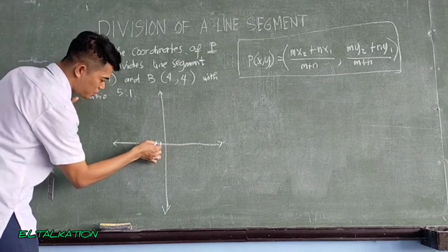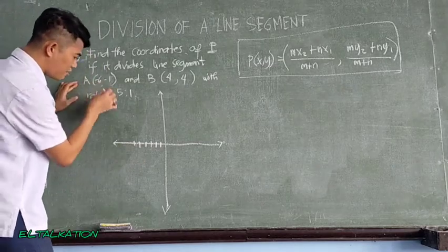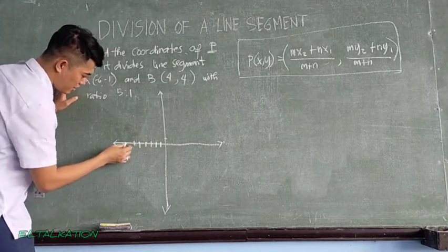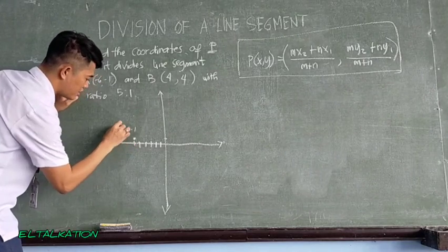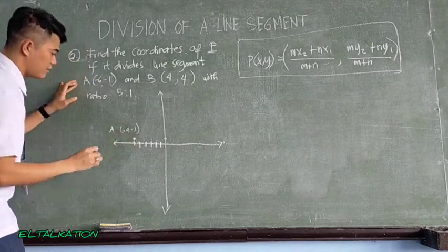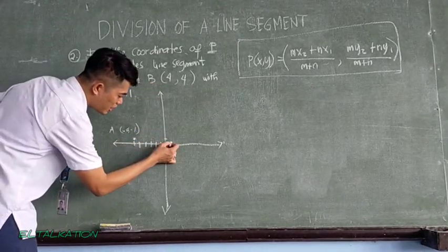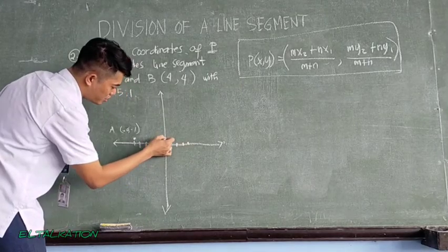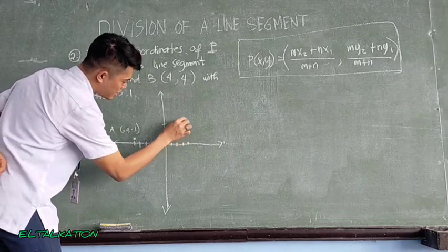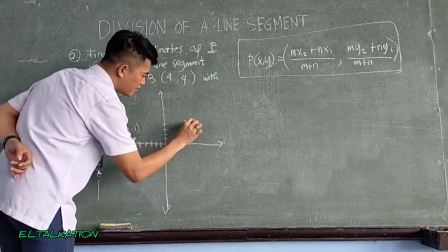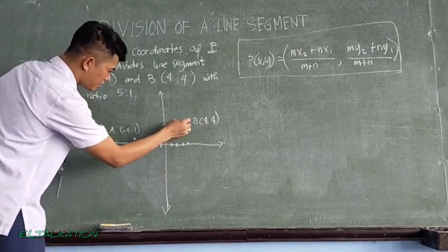So, negative 6 and negative 1. So negative 6, 1, 2, 3, 4, 5, 6. Then negative 1. So negative 6, negative 1, so this is point A. Okay, let's proceed to point B. Positive 4, so 1, 2, 3, 4. And 1, 2, 3, 4. So this is point B, 4 and 4.